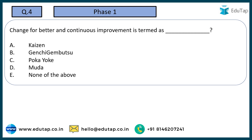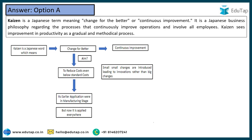Coming to the next question: change for better and continuous improvement is termed as — options are Kaizen, Genchi, Gimbutzu, Pokayoke, Muda, or none of the above. There is a very popular Japanese term: Kaizen, which means continuous improvement. We have to change ourselves for betterment continuously. Changes cannot happen in a day; we cannot depend on radical changes — changes have to happen in a continuous fashion with regular improvement. So option number A, Kaizen, is the correct answer. Kaizen is a Japanese term meaning change for the better or continuous improvement.